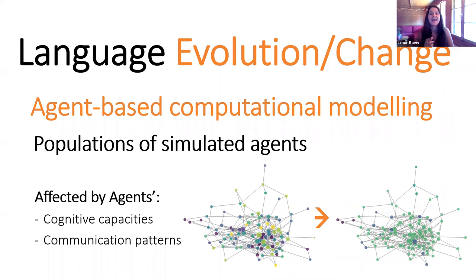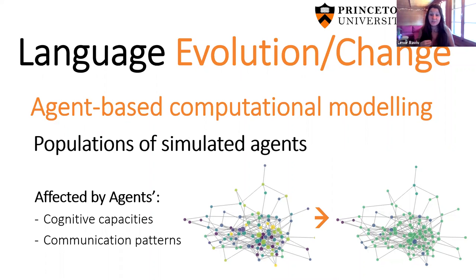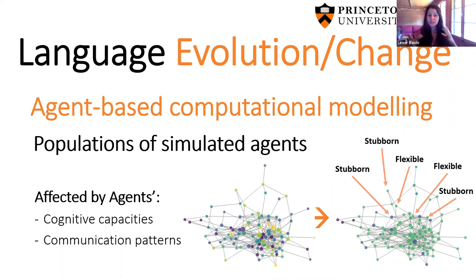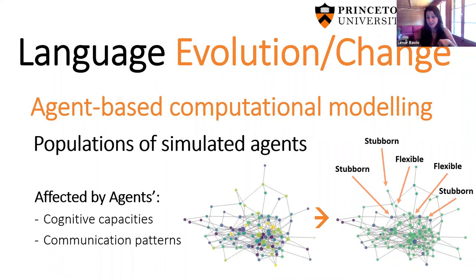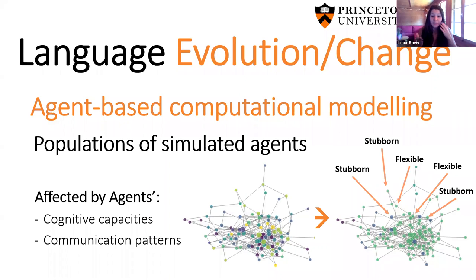These computer models can provide valuable insights by breaking down the complex process of language change into small, transparent steps. We looked at agents' personalities — how likely they are to adapt or accommodate to others — and checked whether the proportion of flexible and stubborn agents affects convergence. The results show that even with many stubborn agents, this only slows down the spread of variants; it doesn't stop it. As long as agents accommodate a little sometimes, the network will eventually converge on new variants. This is why all languages change all the time, even if we don't want them to.